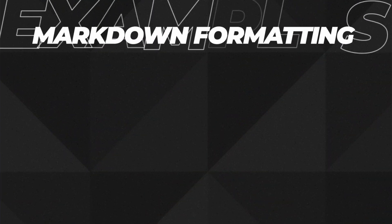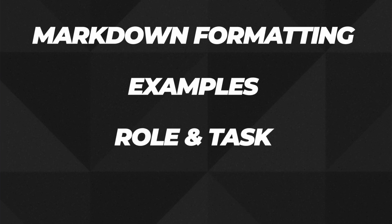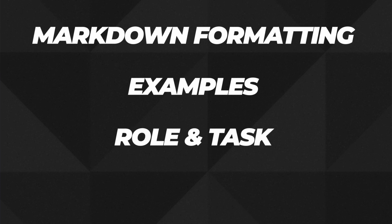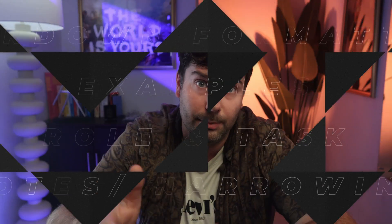There are lots of different prompt engineering formats you can use, but the good ones typically share a few common traits. They typically use markdown formatting, provide relevant examples, usually assign a role and a task using something called chain of thought prompting, where you list out step-by-step what you want the LLM to do. And they typically finish with an opportunity to provide notes or narrowing, where you fix or make any changes to things going wrong throughout the prompt.